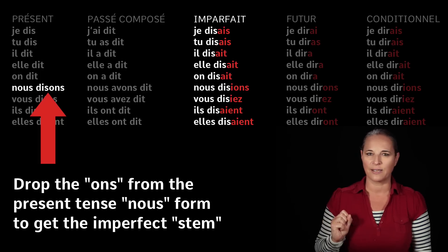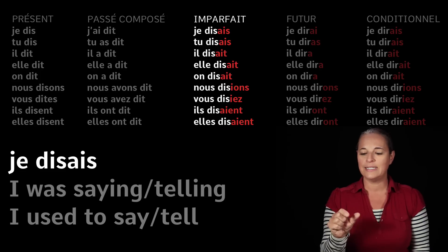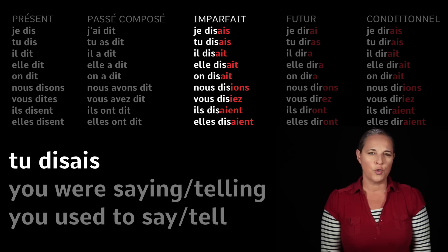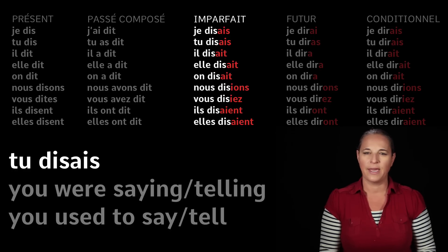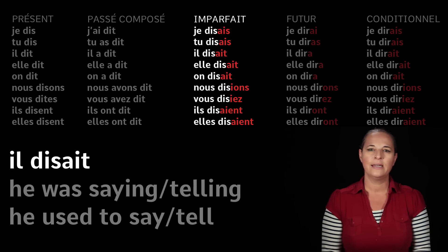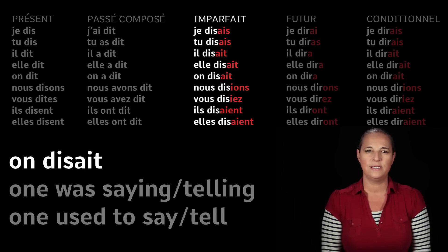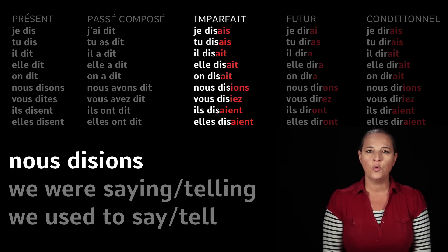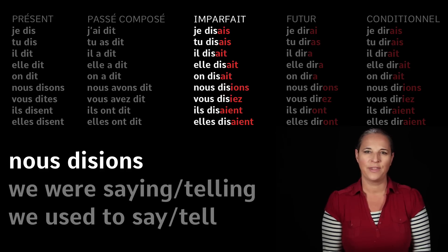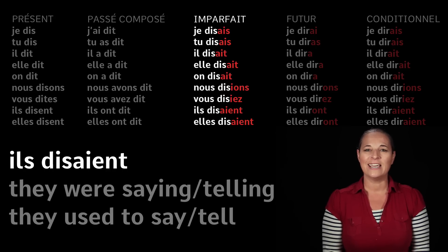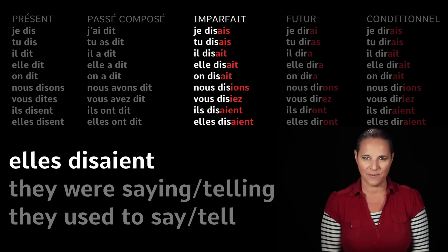So let's have a look at what it looks like: je disais — I used to say, or I was saying. Tu disais, il disait, elle disait, on disait, nous disions, vous disiez, ils disaient, elles disaient.